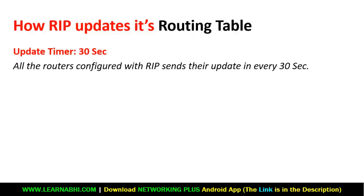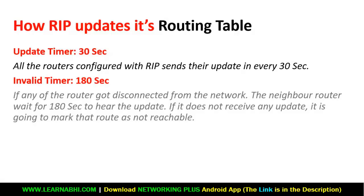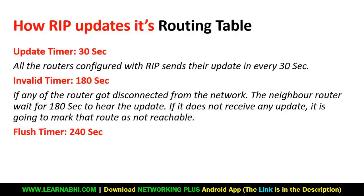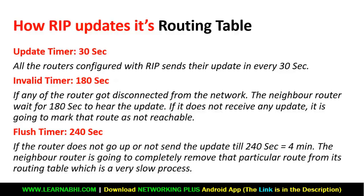The RIP invalid timer is 180 seconds. If any router gets disconnected or the link goes down, the neighbor router waits 180 seconds to hear an update. If no update is received, it marks that route as not reachable. After that, the flush timer is 240 seconds — if the route does not come back up or send an update within 240 seconds (almost 4 minutes), the neighbor router completely removes that route from its routing table. This is a very slow process — 4 minutes is too long.